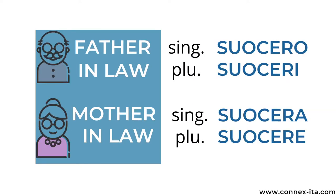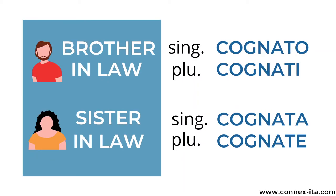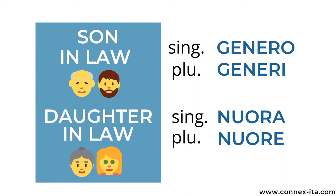The last few words refer to the family that you acquire when you get married or someone in your family gets married. Father-in-law in Italian is suocero, or suoceri in the plural, while your mother-in-law is suocera, or suocere. Then we have brother-in-law — cognato — and sister-in-law — cognata. In the plural they become cognati or cognate.